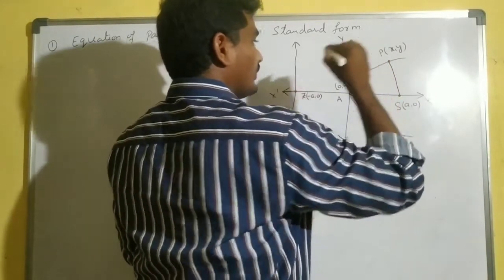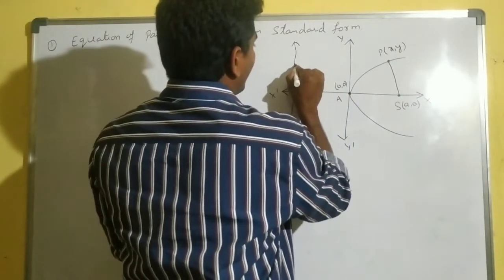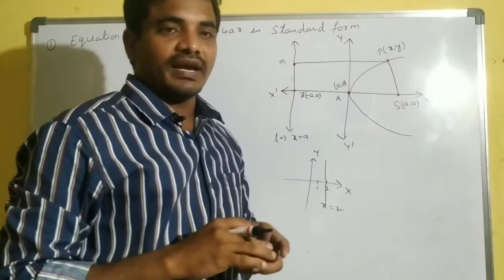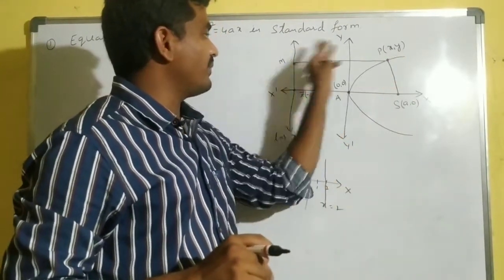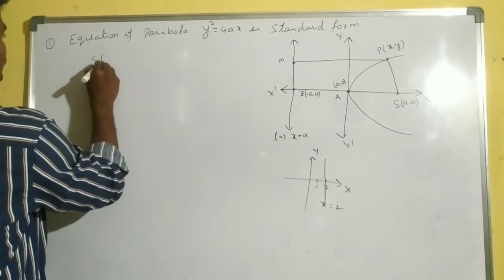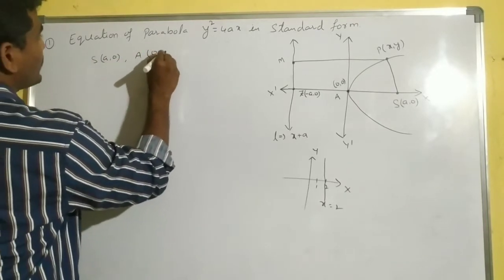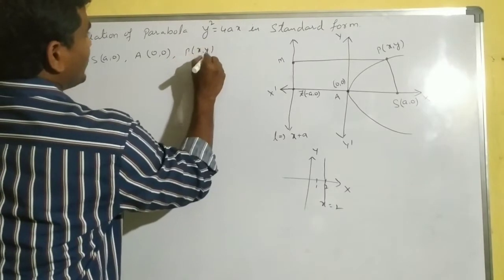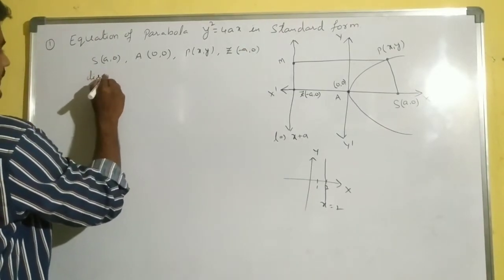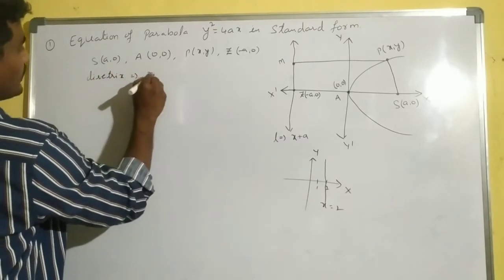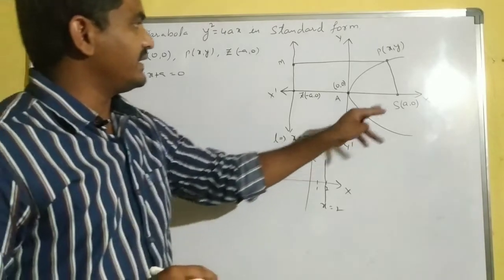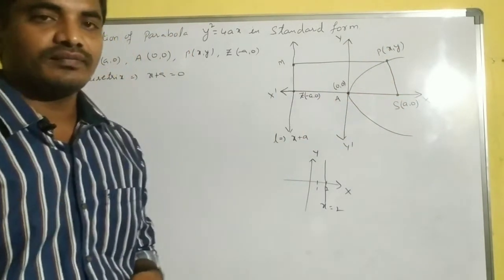I am drawing line PS and taking one point M. PM is perpendicular to the directrix, and PM equals PS. With the help of this figure, S = (a, 0), A = (0, 0), P = (x, y), Z = (-a, 0), and the directrix equation is x + a = 0.